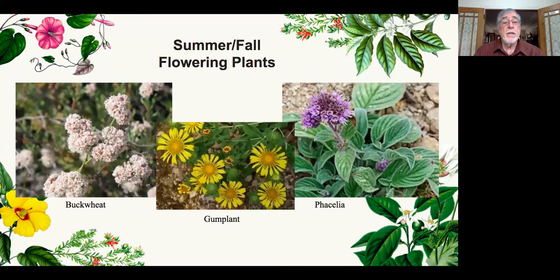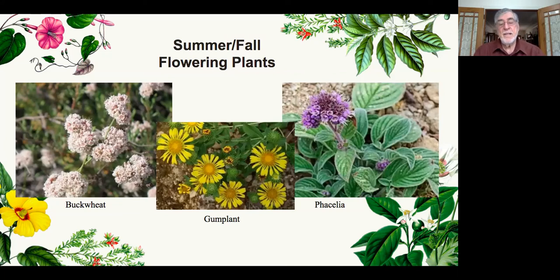Buckwheat — these are native buckwheats. Gum plant, native. Phacelia, native of Southern California but also does well in Northern California. Just because it's from Southern California doesn't mean bees don't like it — move it northward and they'll use it. You just have to follow what the bees tell you to do. Listen in the sense of watching them and they'll tell you what they like, and that's what you ought to plant.